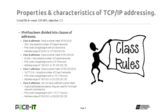IPv4 has been divided into classes of addresses. You will sometimes hear that classful addressing is no longer valid — that's true to an extent, but we still have to learn it. The first class is Class A. Class A addresses always have a subnet mask of 255.0.0.0. That gives us 256 possible Class A networks, because it's 2 to the 8th power, which equals 256. That gives us an address range of 0.0.0.0 up through 127.255.255.255.